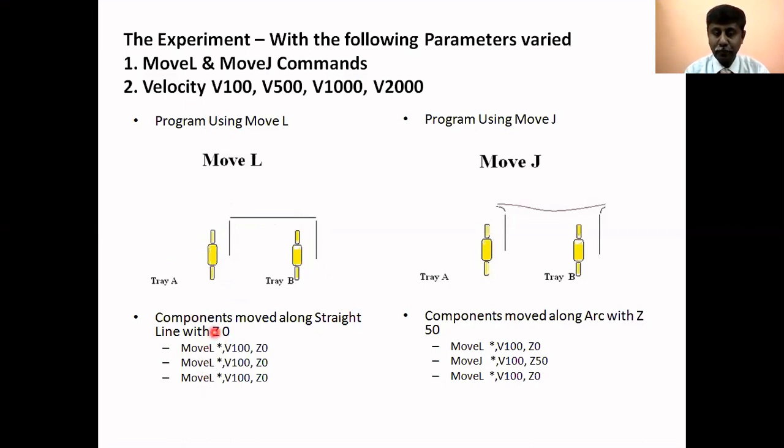Here what we have is: this one is a Move L, this one is a Move J - that is it moves along the arc using Move J command. Here you have a Move J command, then the last one is Move L command. So this is one type of program and this is the other type of program.